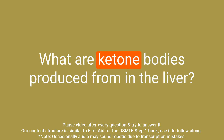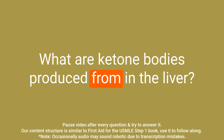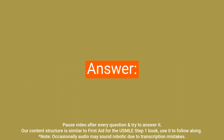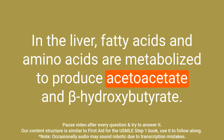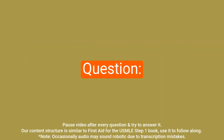Question: What are ketone bodies produced from in the liver? Answer: In the liver, fatty acids and amino acids are metabolized to produce acetoacetate and beta-hydroxybutyrate.